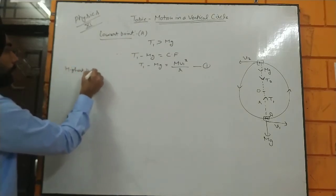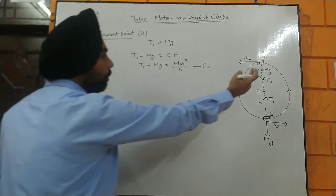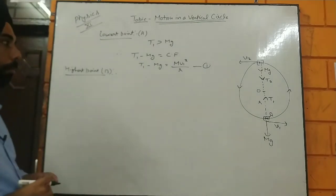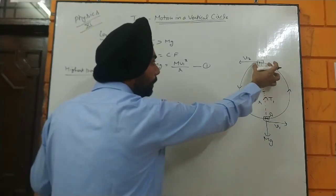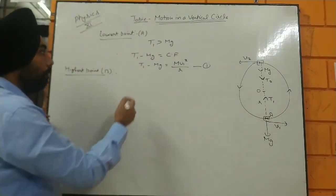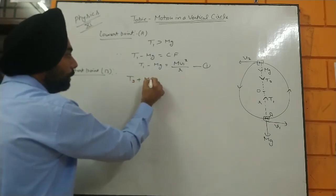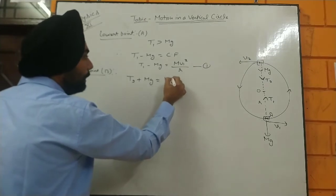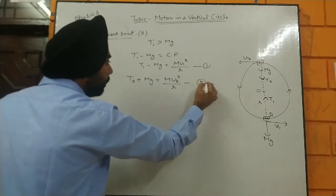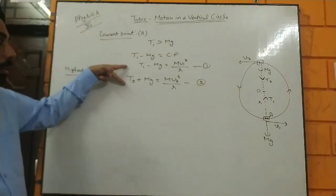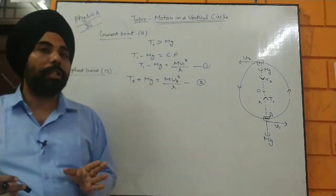Similarly, at the highest point — which is point B in our diagram — both the tension T2 and the weight are acting in the same direction. Which means T2 plus the weight together provide the necessary centripetal force: T2 plus mg equals mv2 squared upon r. That is Equation 2. These are the two equations for the lowest and the highest points, from which we can easily derive the formulas.